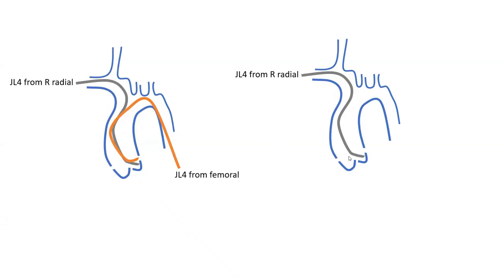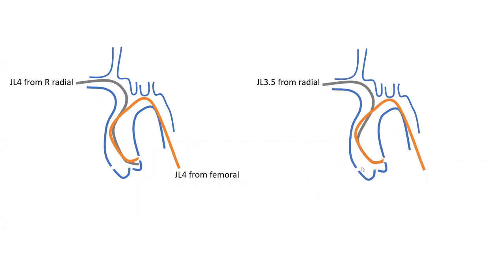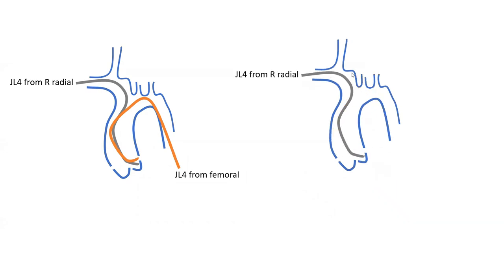So this is how it looks coming from right radial. The question becomes: what catheter, if we're still sticking with the Jutkins left system, will be good from right radial? Or more importantly, each time you see a catheter elongated and pointing down — whether radial or femoral — what's the immediate next step? The answer is you get a shorter arm. So if JL4 is elongated, you use a JL3.5 or JL3.